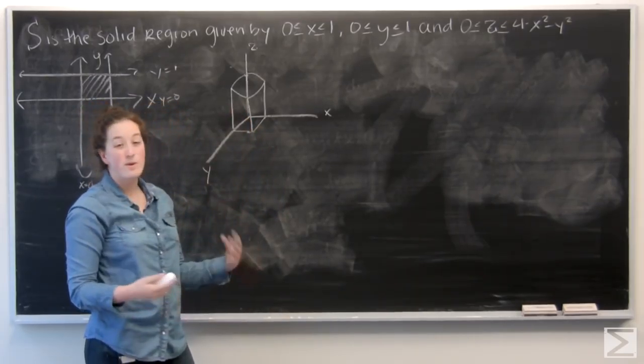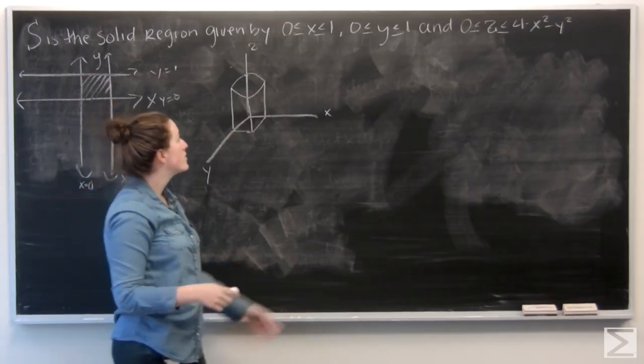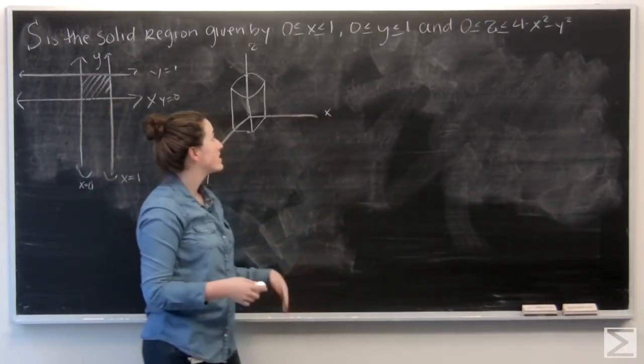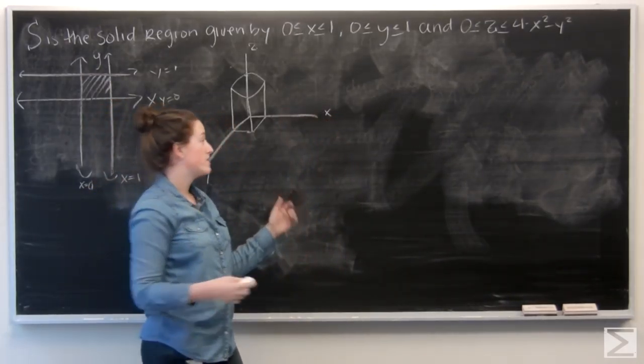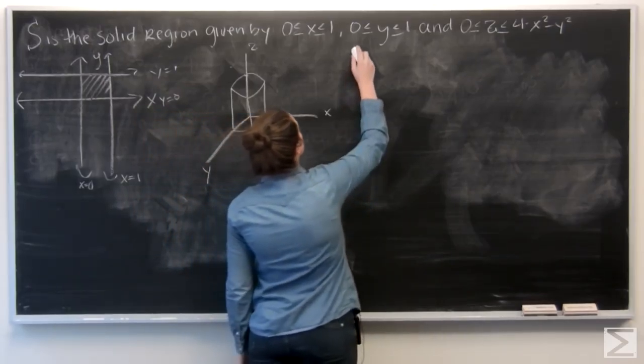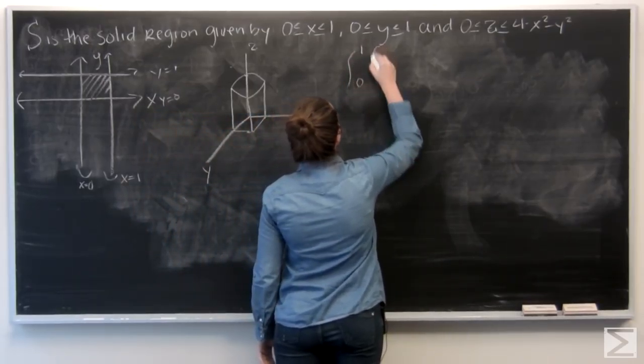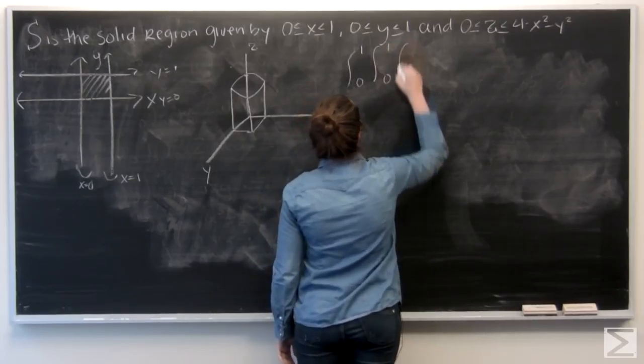And now we want to find the volume of this. So these bounds we were given are going to work really well for the bounds of integration. So I'm going to put x on the outside, then y, then z.